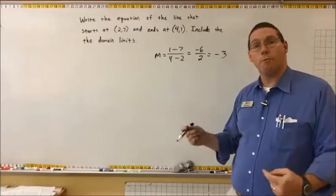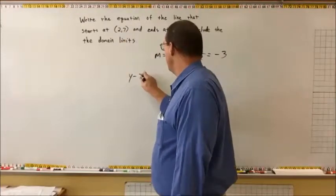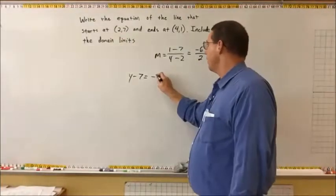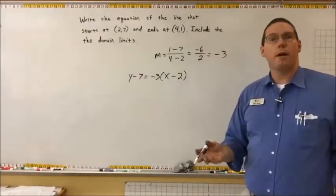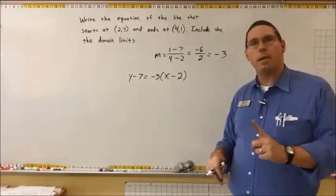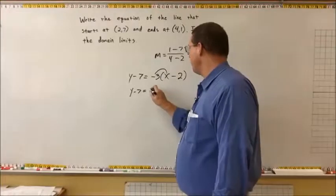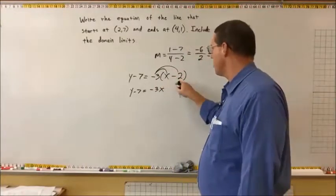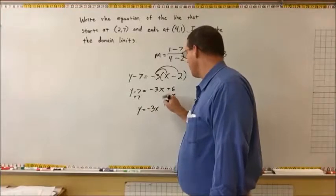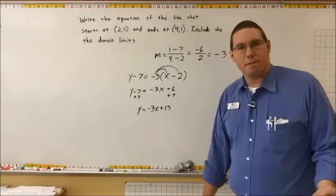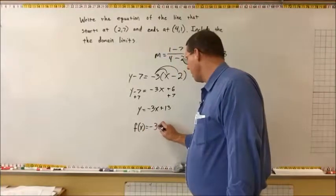Now, putting it in point-slope form using the point (2, 7): y minus 7 equals negative 3 times (x minus 2). We want to write it as a function in slope-intercept form, so we distribute the negative 3: y minus 7 equals negative 3x plus 6. Adding 7 to both sides gives y equals negative 3x plus 13. Written as a function: f(x) equals negative 3x plus 13.